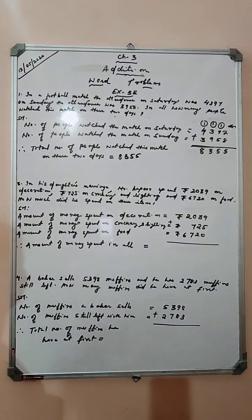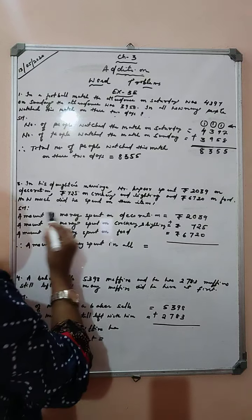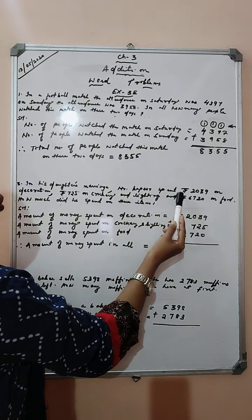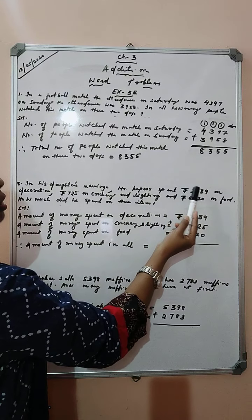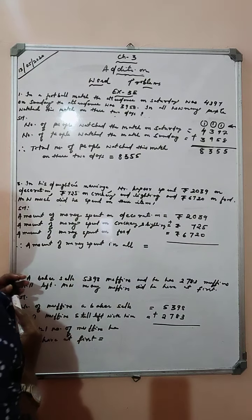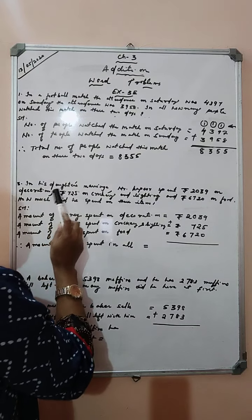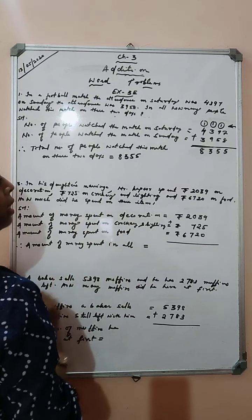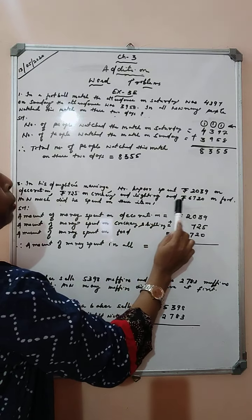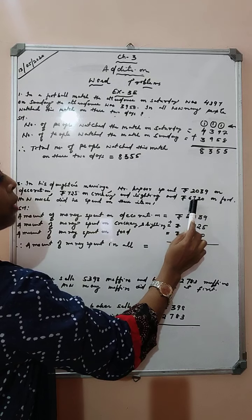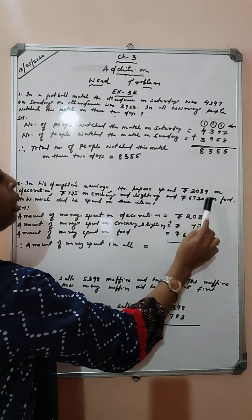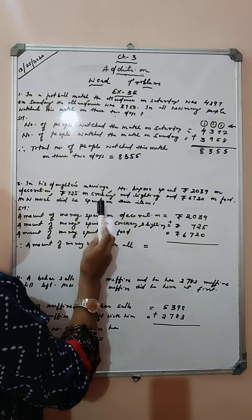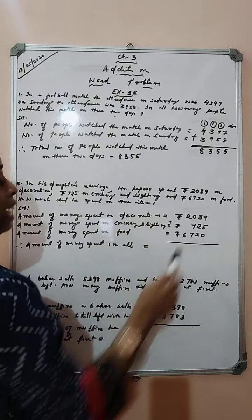Next question: in his daughter's marriage, Mr. Kapoor spent Rs. 2,039 on decoration, Rs. 725 on crockery and lighting, and Rs. 6,720 on food. How much did he spend on these items?